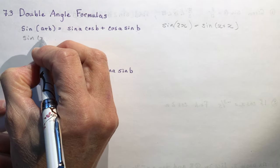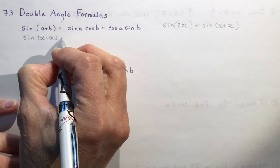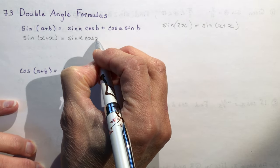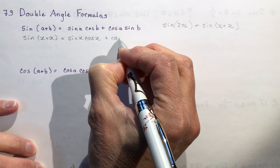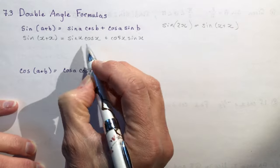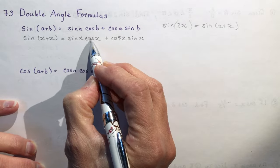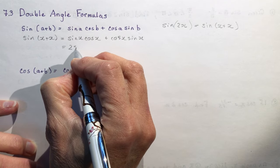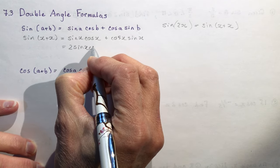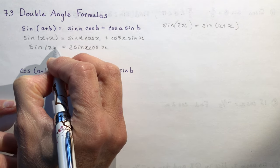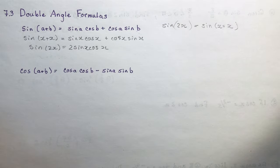Let's find out what the sine of x plus x is. Using the compound angle formula, we get sine x cos x plus cos x sine x, and you can see we're adding the same thing. That gives us 2 sine x cos x. So the sine of 2x is 2 sine x cos x — that's the first formula you'll want to remember.